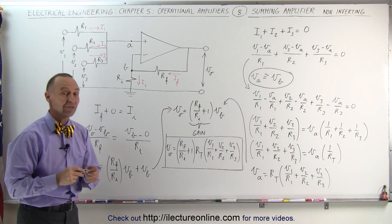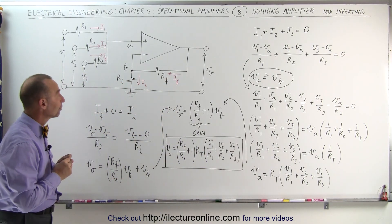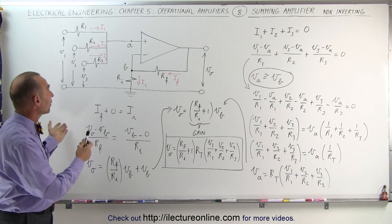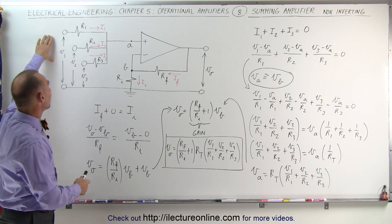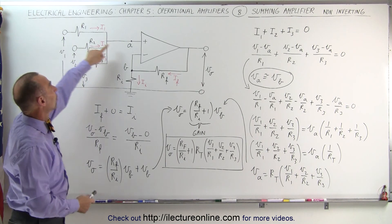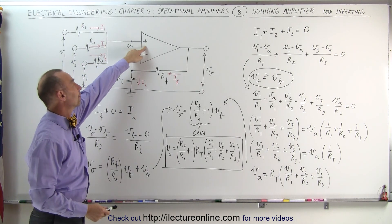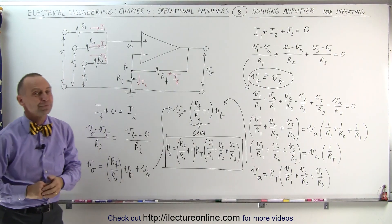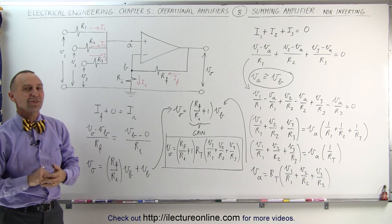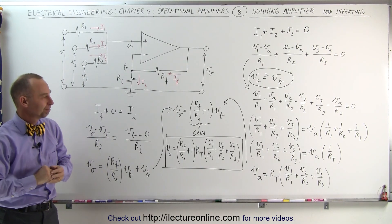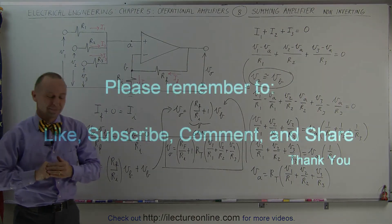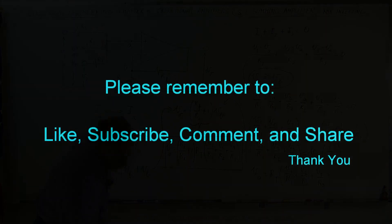And that's how we find the output voltage with a summing amplifier when we have the inputs connected to the non-inverting terminal of the amplifier. And that's how it's done. Thank you.